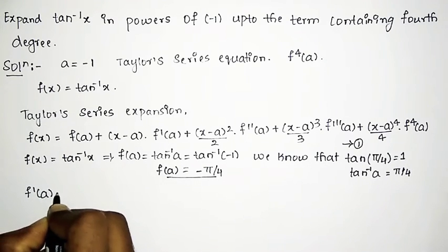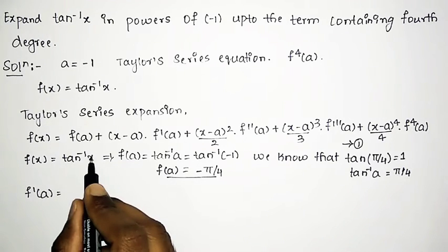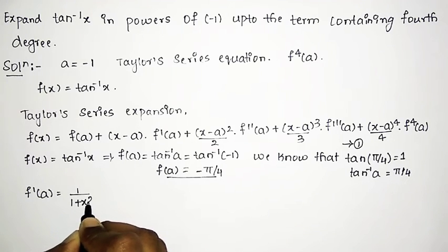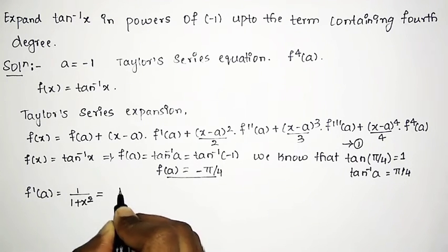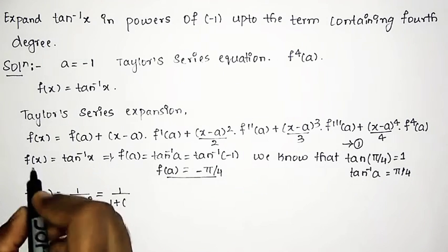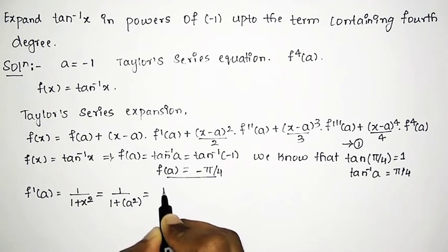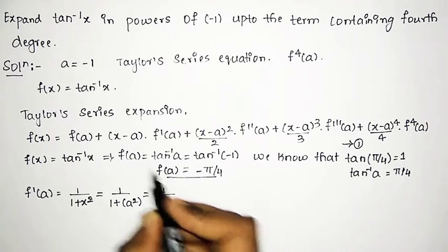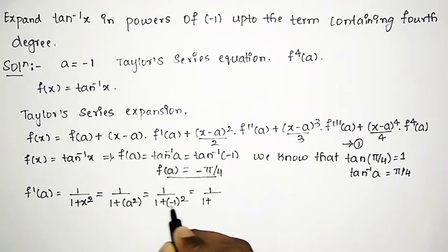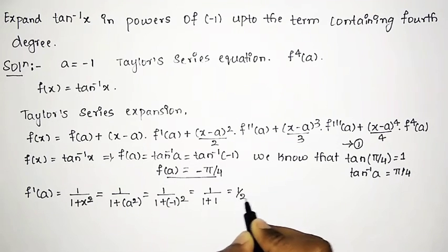Next we find f'(a), the differentiation of tan inverse x, which is 1 divided by (1 + x²). Substituting a = minus 1: f'(a) = 1/(1 + (−1)²) = 1/(1 + 1) = 1/2. So f'(a) = 1/2.